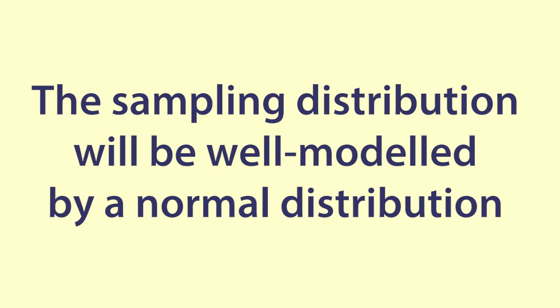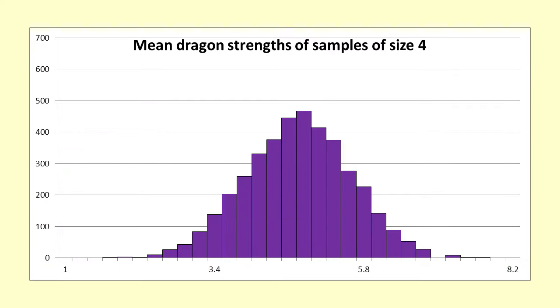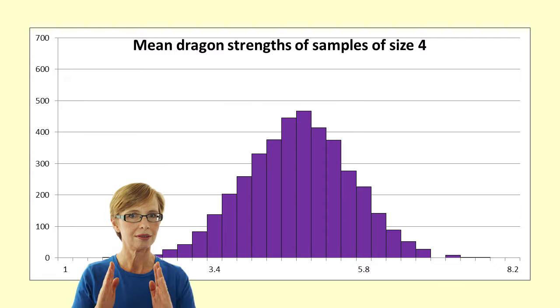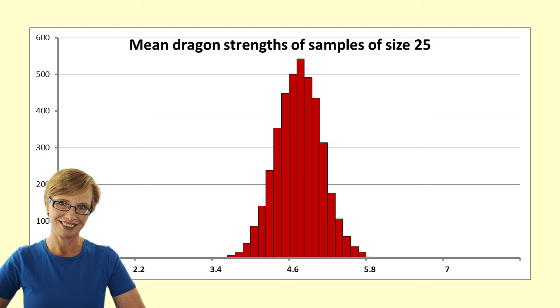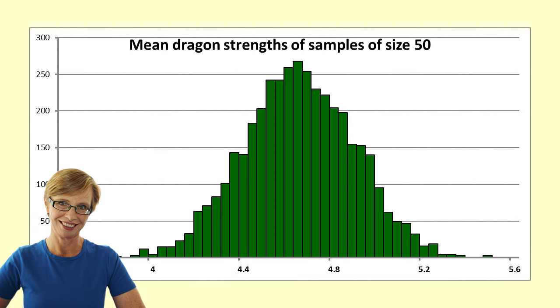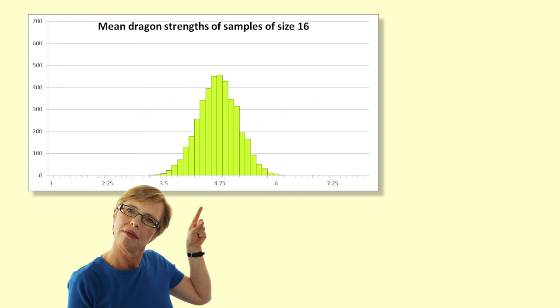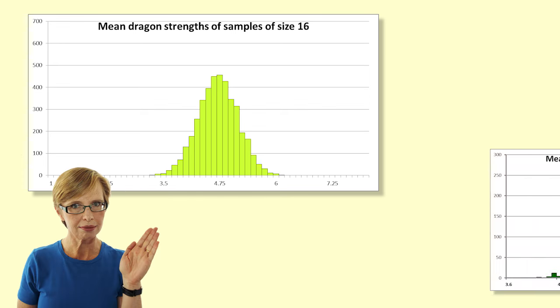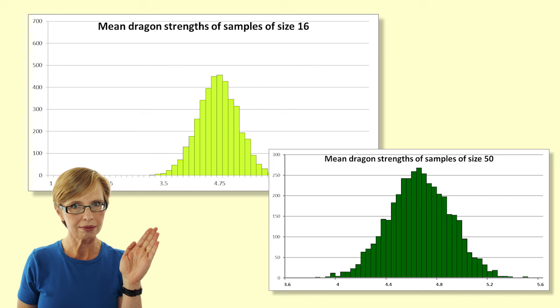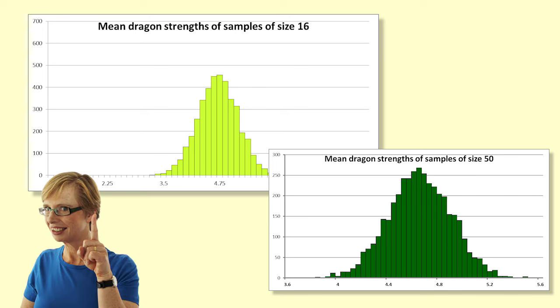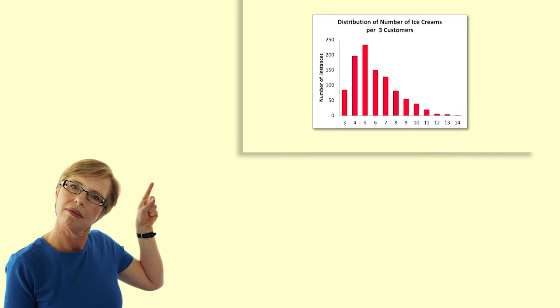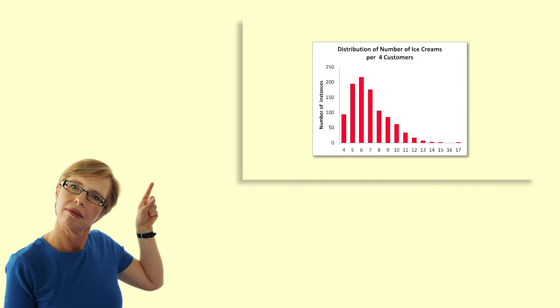Aspect two: The sampling distribution will be well modeled by a normal distribution. You can see that even with samples of size four that the distribution resembles a normal distribution with a bell shape. If we take larger samples the distribution gets closer in shape to a normal distribution. Here are graphs showing the spread of sample means of dragons from samples of size 16 and 50. You can see that the shape is getting more like the normal distribution. This is also shown in our video about the normal distribution.